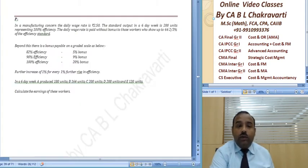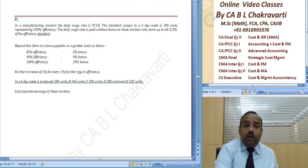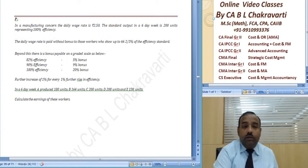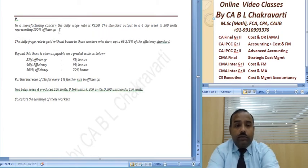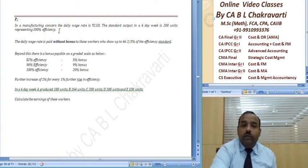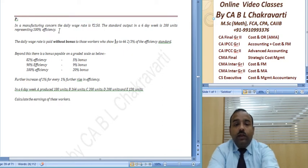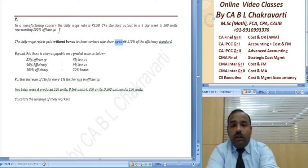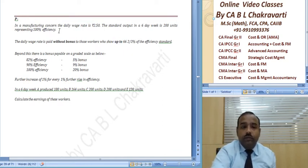Now what it says in the problem is that the daily wage rate is paid without bonus to those who show up to 66% efficiency.